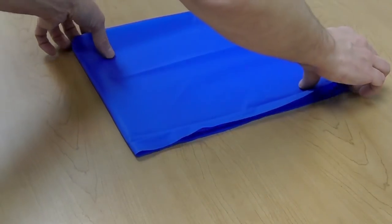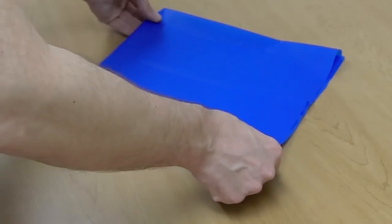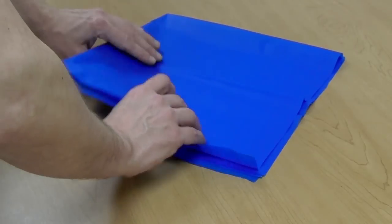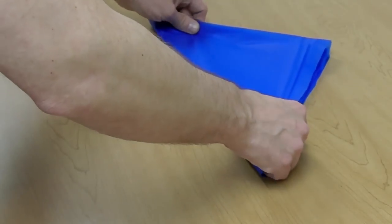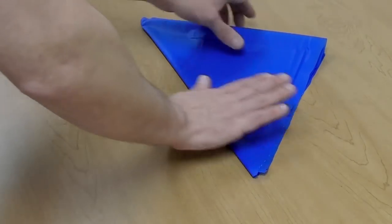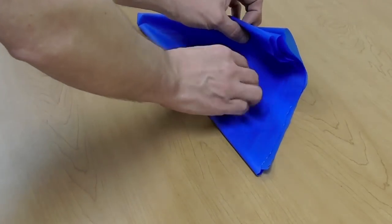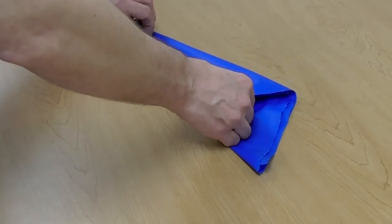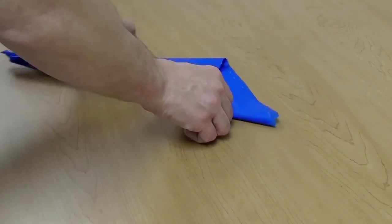Now rotate the folded sheet 45 degrees clockwise and bring the bottom corner up to the top corner. Fold it neatly again. Last, you're going to bring the top left edge down to the bottom edge and fold it neatly once more.